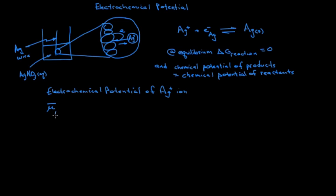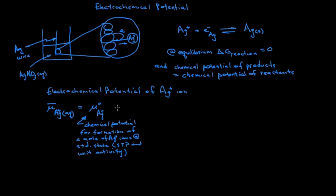So how do we express the electrochemical potential of different species? Let's consider the electrochemical potential of the silver ions in this solution. We use mu bar for the electrochemical potential of a species. The first component is the chemical potential for formation of a mole of silver ions at standard state, and we'll define our standard state to be standard temperature and pressure and unit activity for the ion. If the system moves away from unit activity, we must account for that. We do so by adding a term that is RT times the natural log of the activity of the ions.